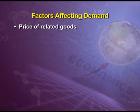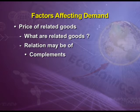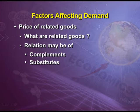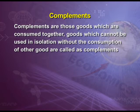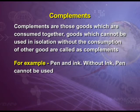The fourth factor affecting demand is price of related goods. Related goods can be complements or substitutes. Complements are those goods which are consumed together — goods which cannot be used in isolation without the other good. Example: pen and ink; without ink, pen cannot be used. Like car and petrol; without petrol, car cannot be used.